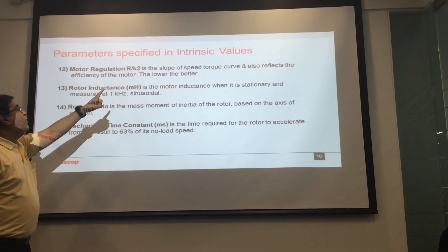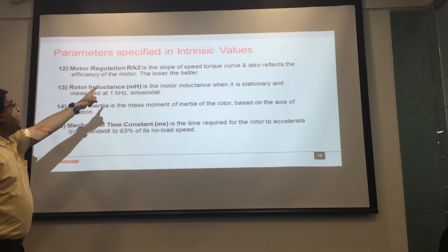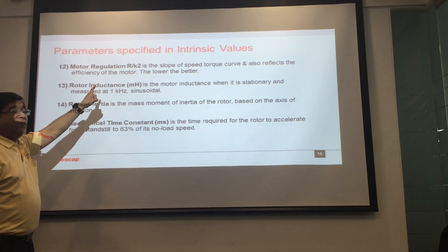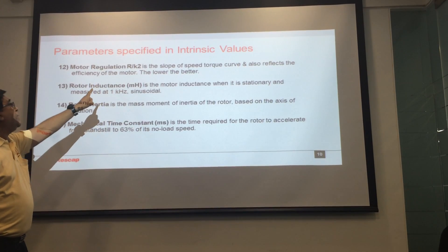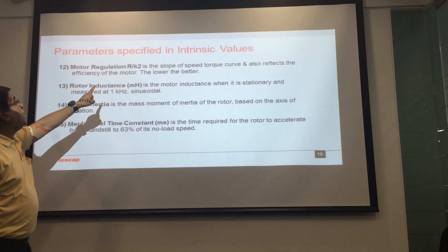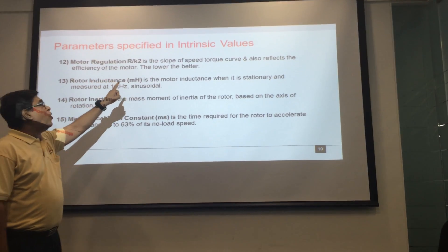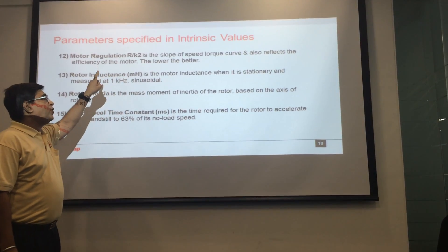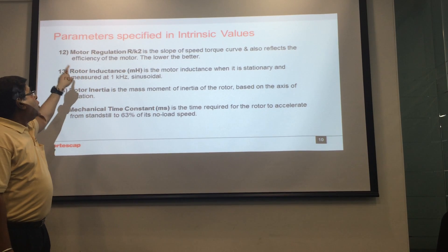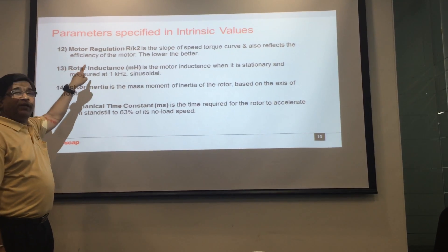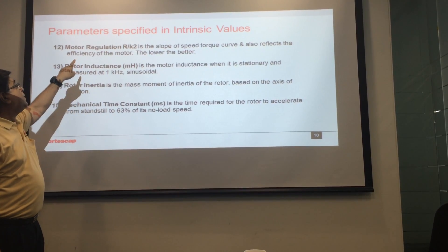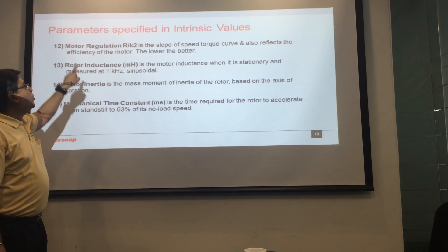Continuing with intrinsic values: motor regulation is a very important parameter — it is R divided by K squared. It is the slope coefficient of the speed torque curve and also reflects core loss or the efficiency of the motor. The lower it is, the better the motor.